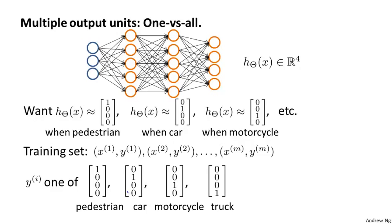What we're going to do in this example is that whereas previously, we had written out the labels as y being an integer from one, two, three, or four. Instead of representing y this way, we're going to instead represent y as follows.